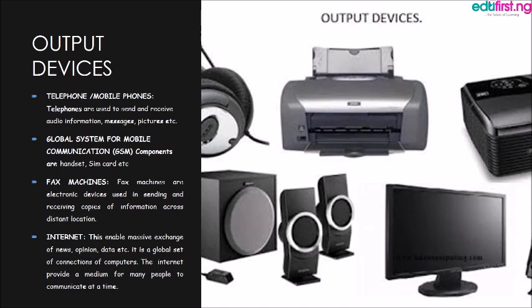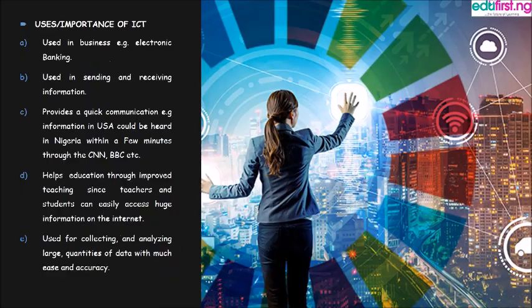The internet provides a medium for many people to communicate at a time. Uses or importance of ICT: ICT is used in businesses — for example, electronic banking. ICT is used in sending and receiving information. ICT provides quick communication; for example, information in the USA could be received in Nigeria within a few minutes through CNN, BBC, and other channels. ICT also helps education through improved teaching, since students and teachers can easily access huge amounts of information on the internet.